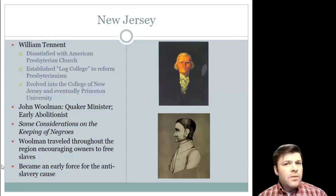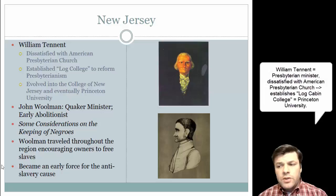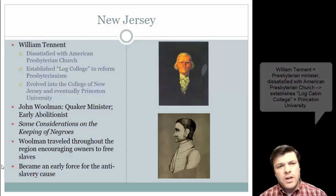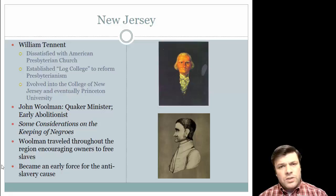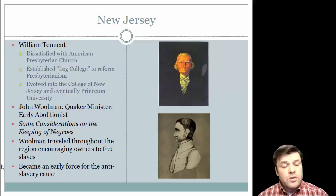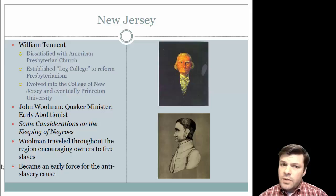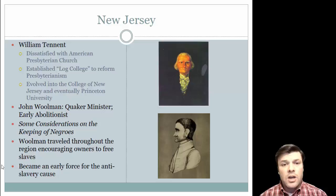A Presbyterian minister by the name of William Tennant arrived and became very dissatisfied with the American version of the Presbyterian church. A Scots-Irish immigrant, he was so dissatisfied that he eventually founded a religious learning center he referred to as Log College — because at the time it was literally a log cabin serving as a center for studying religion. The purpose was to reform Presbyterianism to his liking. Much like Harvard and Yale, this institution eventually evolved into the College of New Jersey and ultimately into what we call Princeton University — another very elite and very old American university.